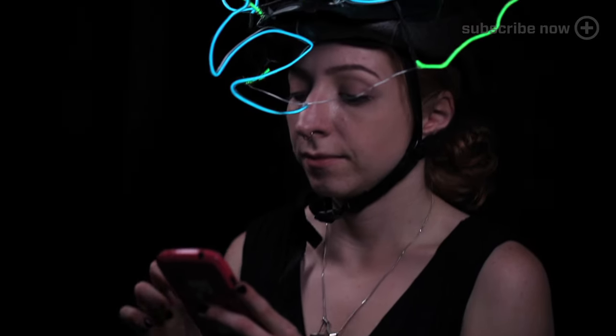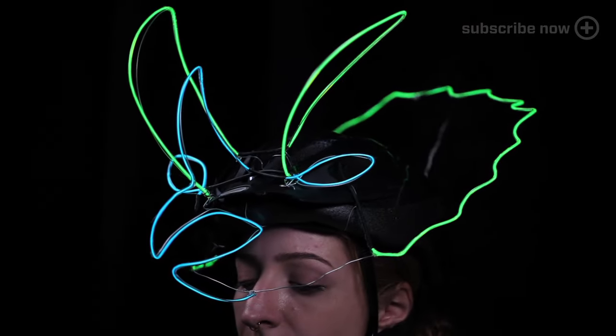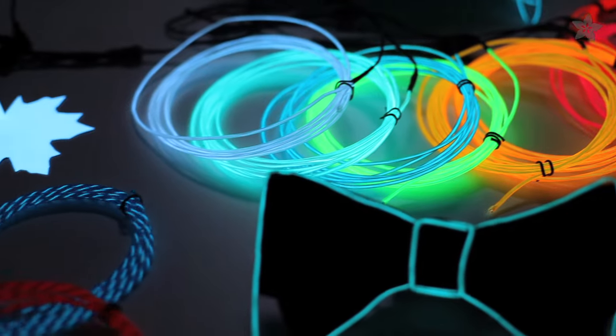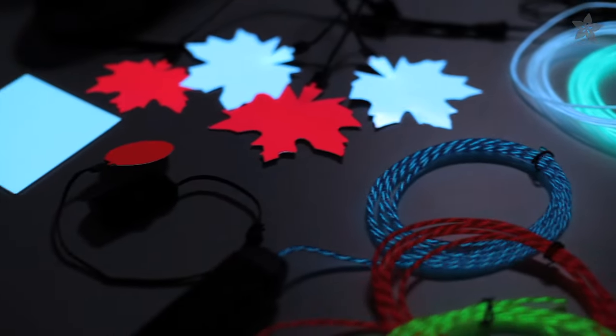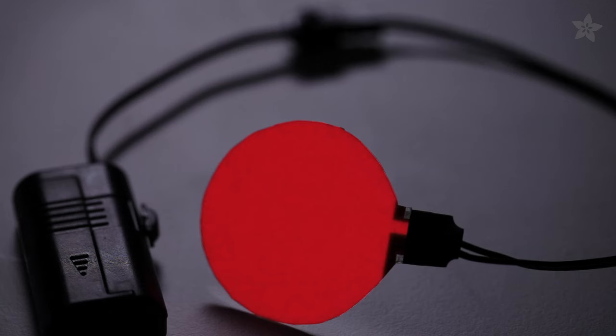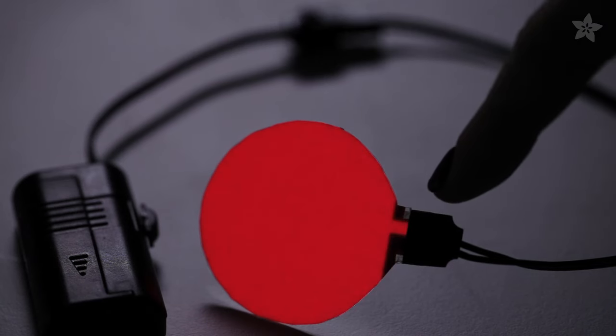EL materials are great for adorning wearable projects, like a fun animal mask or a hooded sweatshirt. Since EL tape and panel conducts evenly over the whole plane, you can cut it or mask it with vinyl to make any shape you want, as long as the cut shape is contiguous with the power connector.